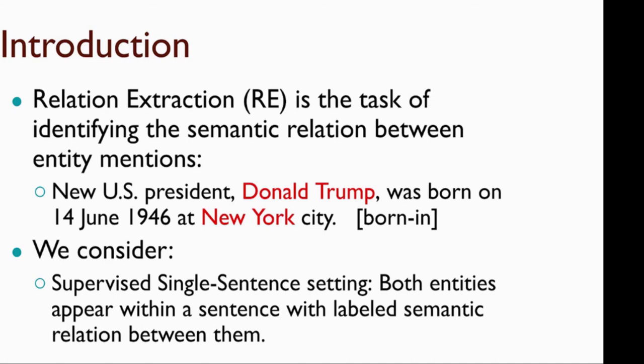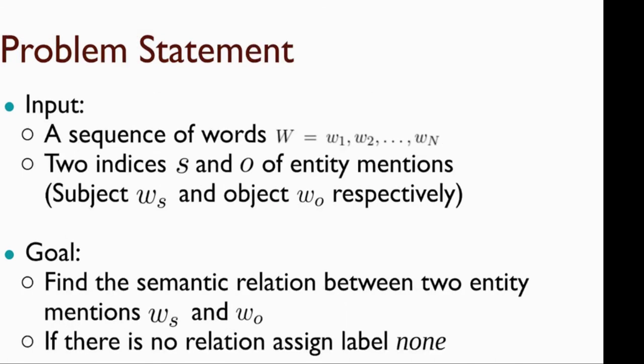In this work we consider a supervised single sentence setting which means that both entities appear within a sentence and the label for that sentence is determined by human. We are given a sequence of words and also two indices, S and O, which indicates positions for the subject and object of that relation. And our goal is to find the semantic relation between two entity mentions. If there is no relation between these two entities, we assign the label NONE to that sentence.